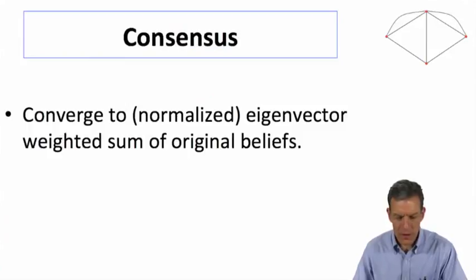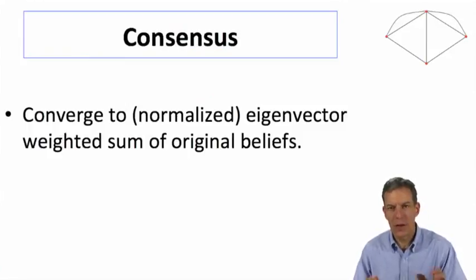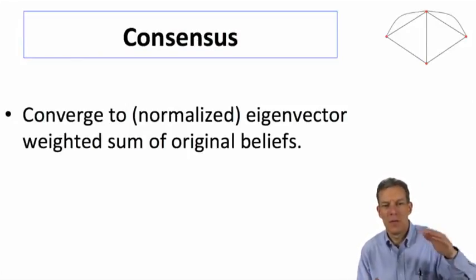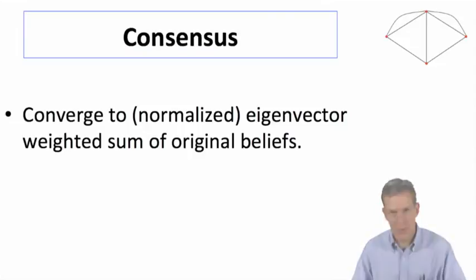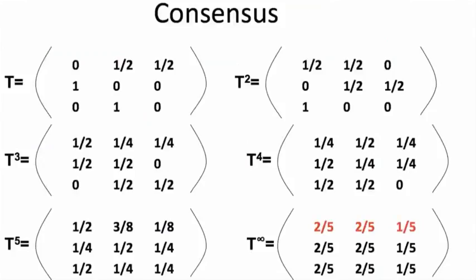That tells us what we get to when we get convergence and consensus. It looks like a normalized left-hand side unit eigenvector, and that gives us the weighted sum of the original beliefs to figure out what the limit is.